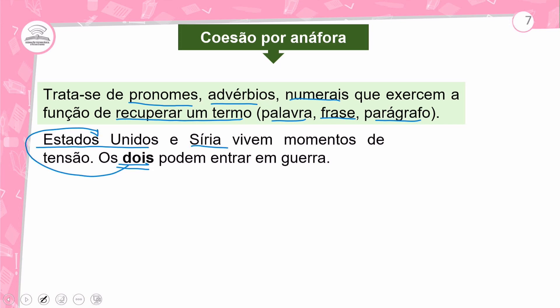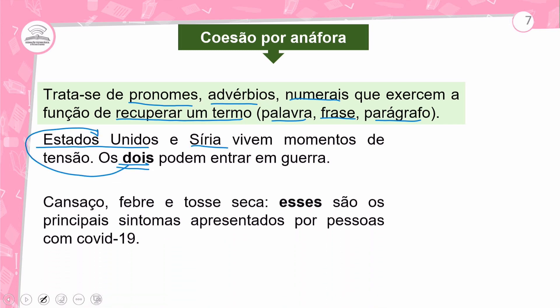O elemento de coesão por anáfora aqui é 'os dois' — ele é o numeral. Outro exemplo: cansaço, febre, tosse seca. Esses são os principais sintomas apresentados por pessoas com Covid-19. Temos aqui o pronome demonstrativo 'esses', que está fazendo a coesão por anáfora, ligado aos termos citados anteriormente: cansaço, febre e tosse seca.